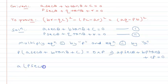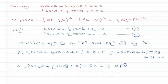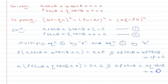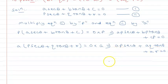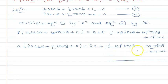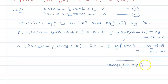Multiplying equation 2 by A: A·(p·sec θ + q·tan θ + r) = 0, which gives AP·sec θ + AQ·tan θ + AR = 0.